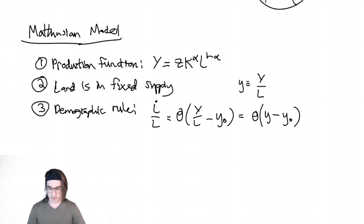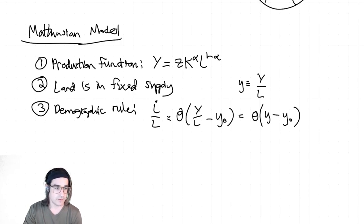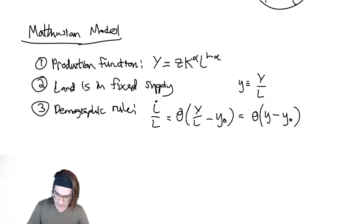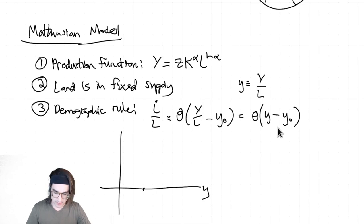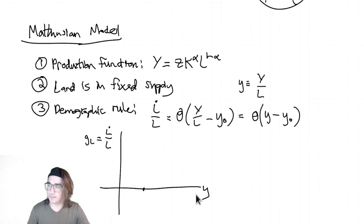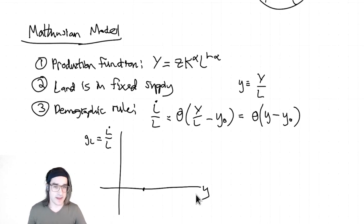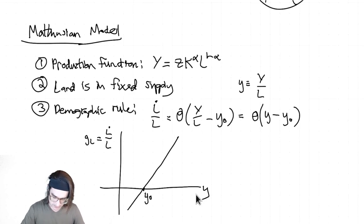The population growth rate can be positive or negative depending on whether you're above or below Y-zero. So that's it. What we found eventually was that you have this stagnation outcome — your per capita income converges to Y-zero. The easiest way to think about this is graphically. There's a relationship between Y on the x-axis and the growth rate of population G_L on the y-axis — a positive linear relationship that crosses zero at Y-zero.